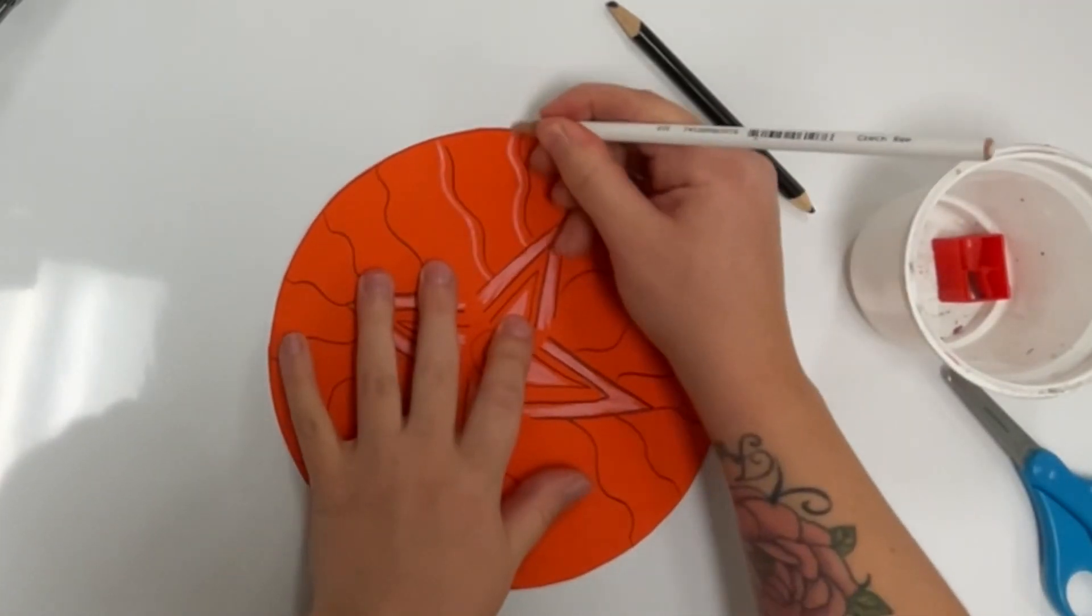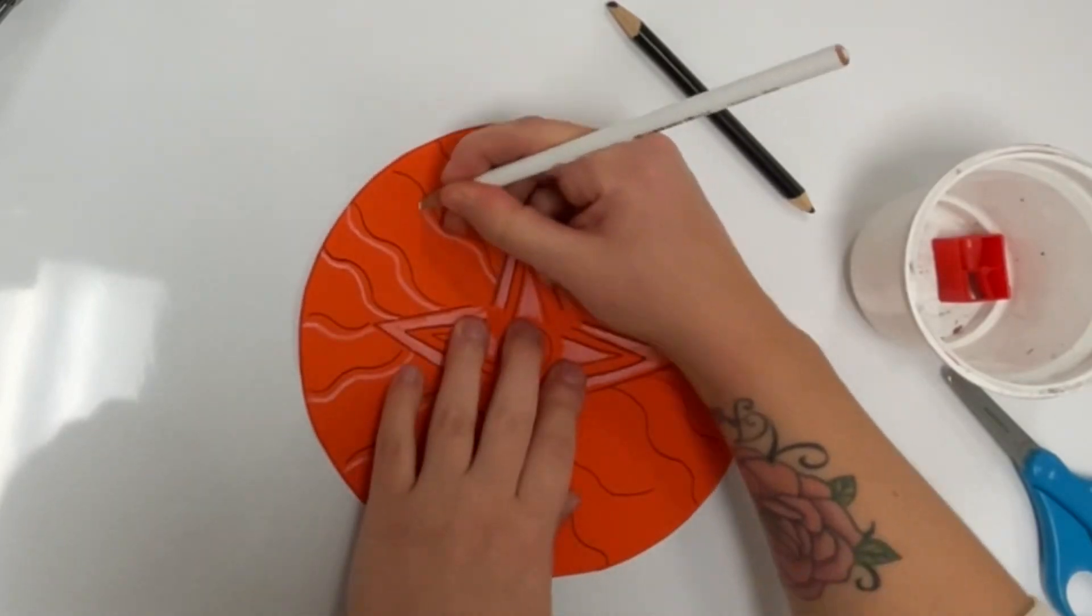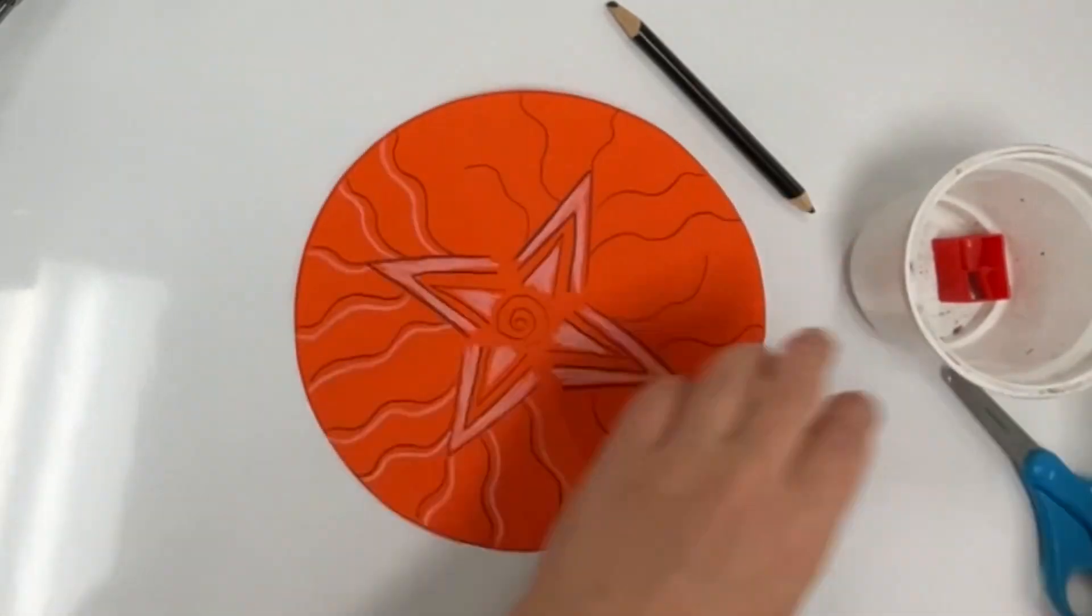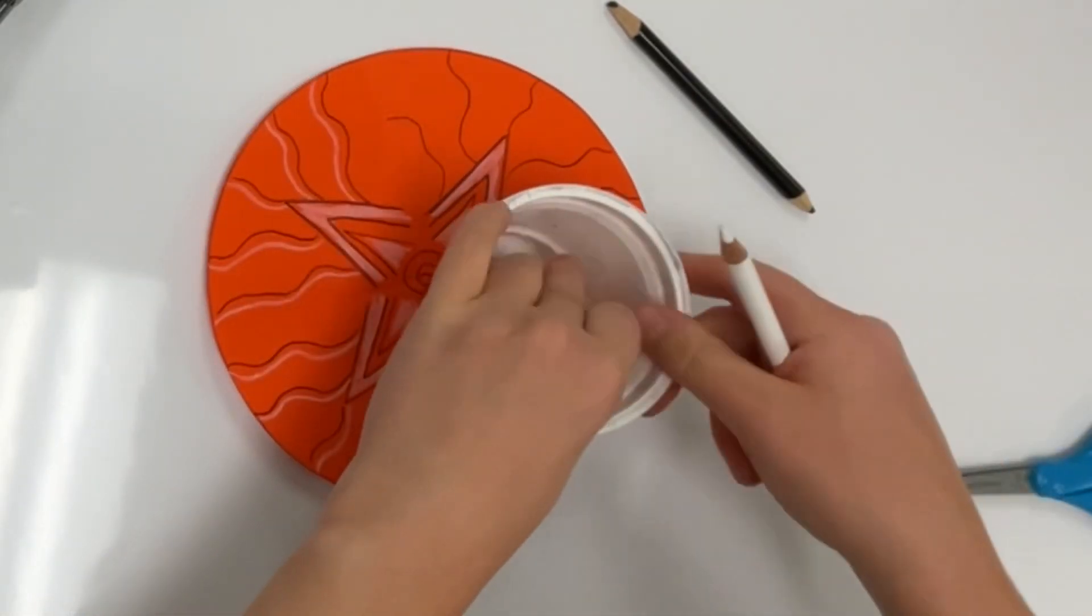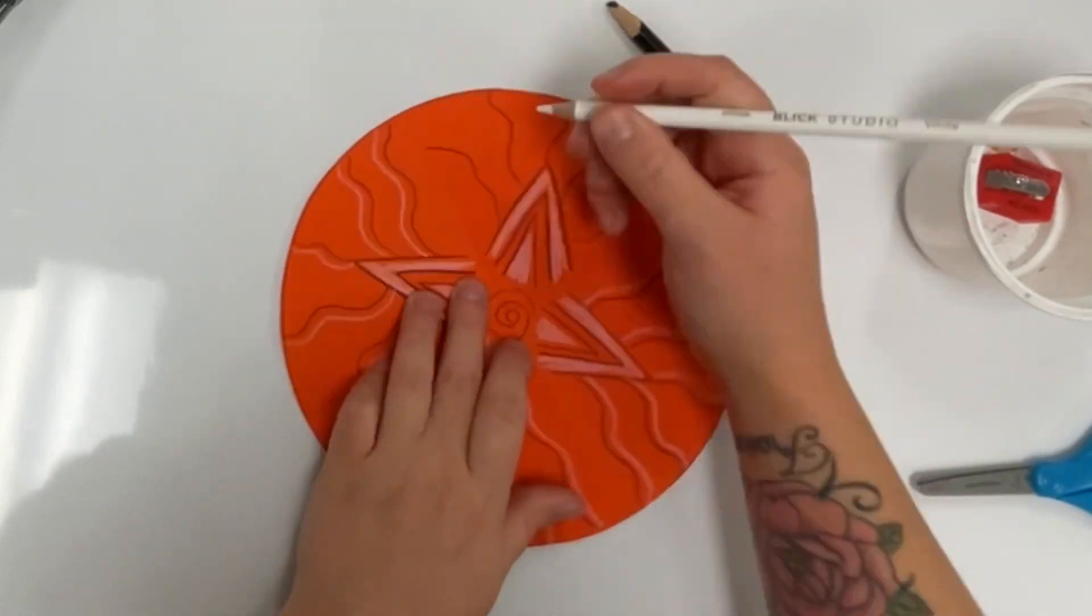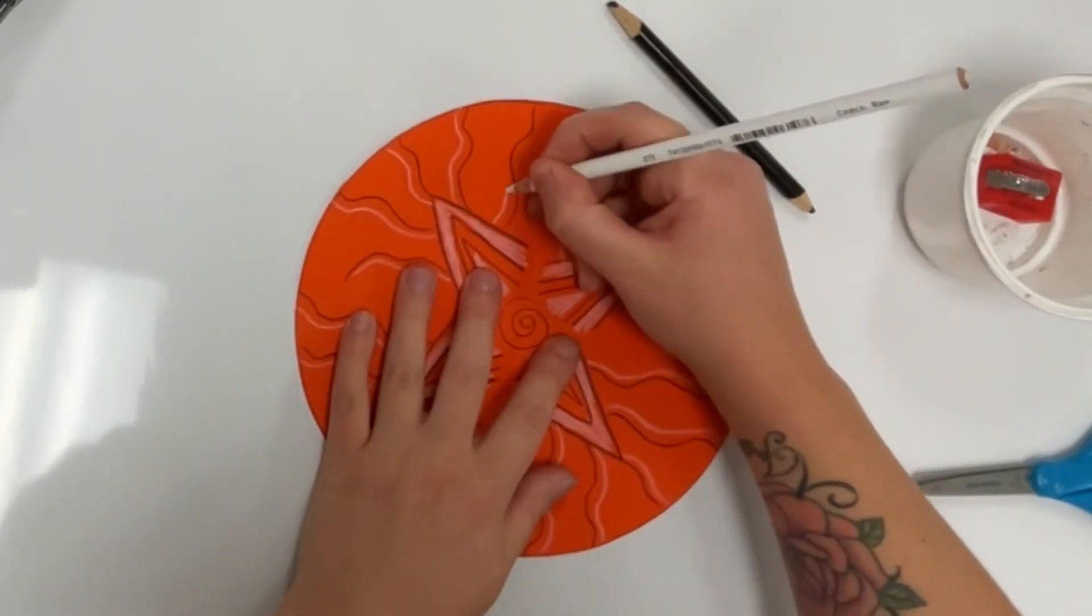You're going to use a black colored pencil and a white colored pencil to make your design. And if you need to sharpen your pencils, I'll have little pencil sharpeners on the table for you to use.